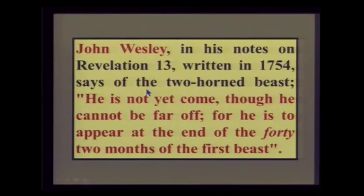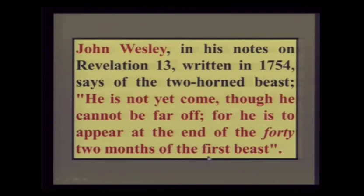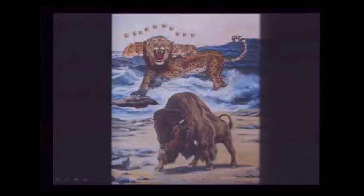What did the reformers think? Wesley wrote in his notes on Revelation 13 — written in 1754 — about the two-horned beast: 'He is not yet come, though he cannot be far off, for he is to appear at the end of the 42 months of the first beast.' These people were remarkably sharp. What nation would arise in an area with no prior political territorial organizations or kingdoms, be a Christian nation with lamb-like principles, and eventually become so powerful as to dictate to the world? There's only one that qualifies.